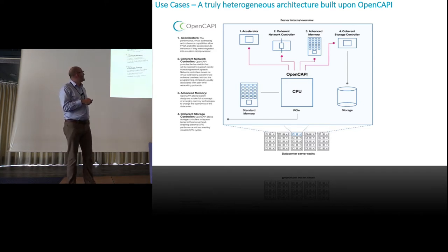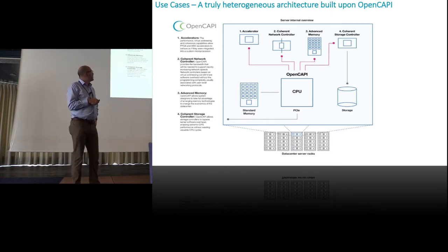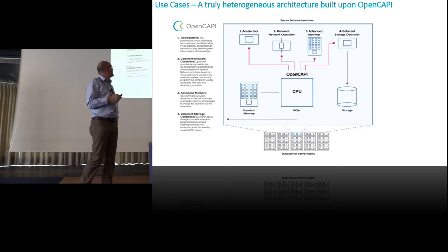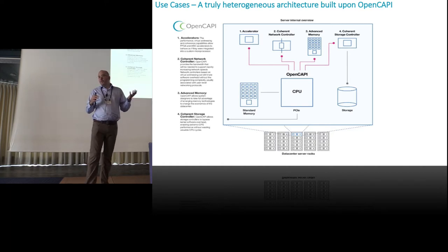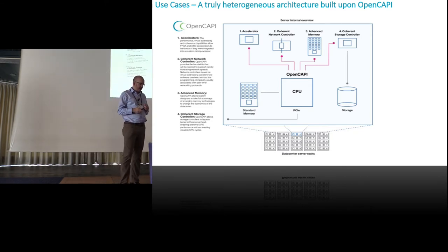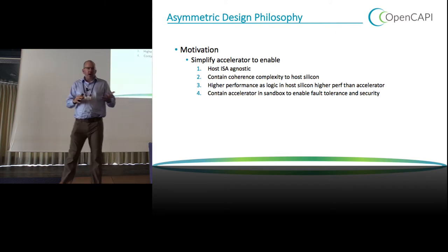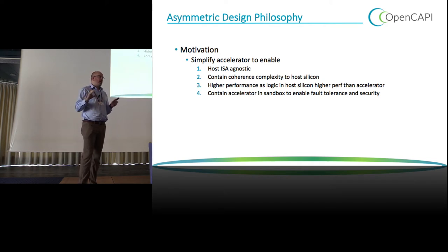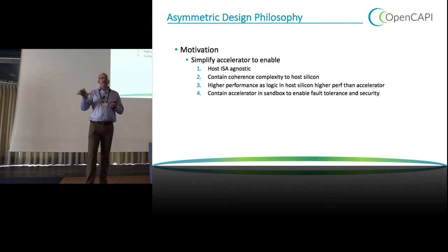To draw a picture of this: you've got your CPU with a bunch of OpenCAPI lanes coming out of it. Then you can attach accelerators, GPUs, FPGAs with arbitrary accelerators, ASICs, network controllers, low latency networking interfaces, and memory including storage class memory controllers. That broad range of devices sits in the data center, giving everybody the capability to accelerate things.